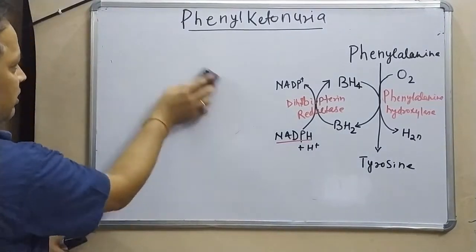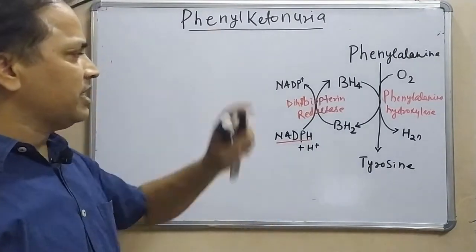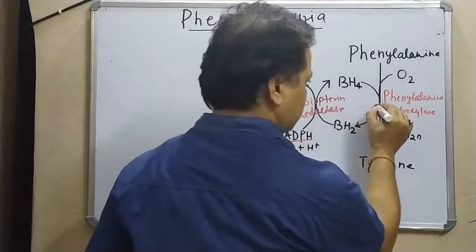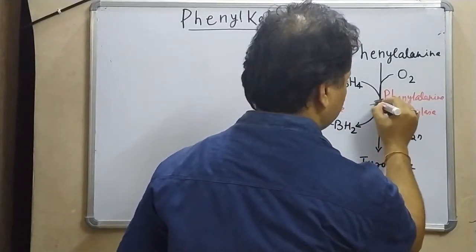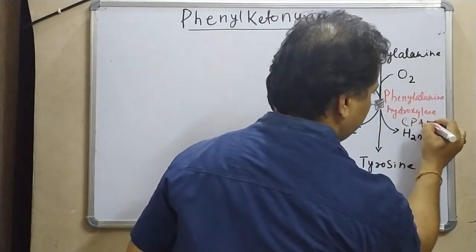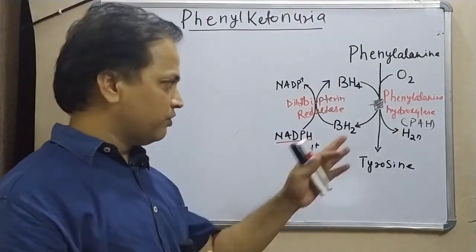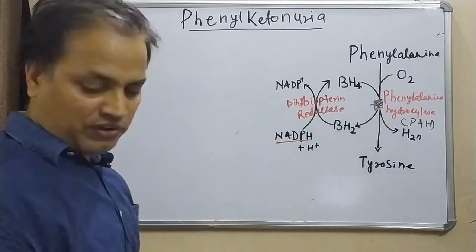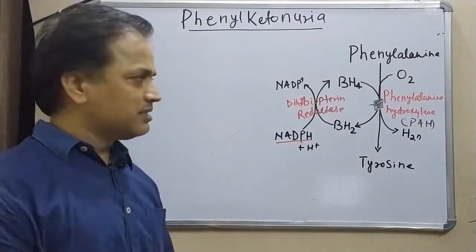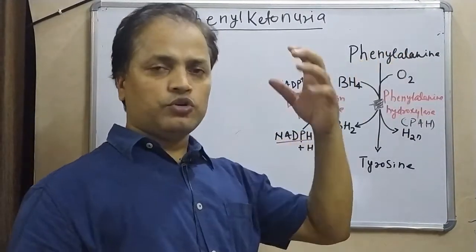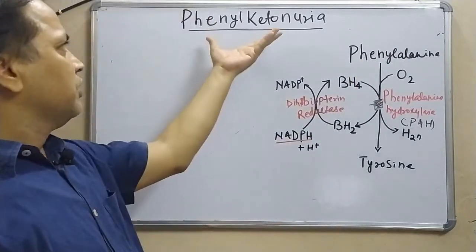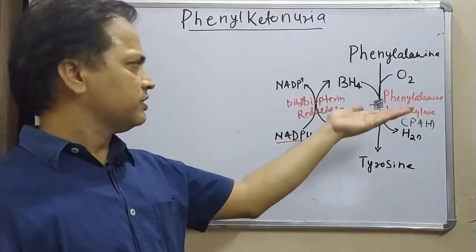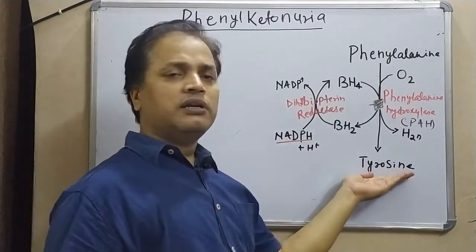Now, in classical phenylketonuria, the enzyme phenylalanine hydroxylase (PAH) is defective — the gene for PAH is mutated. So the conversion of phenylalanine to tyrosine does not happen. As a result, phenylalanine accumulates in the body, and tyrosine is not produced. This accumulation of phenylalanine is the hallmark of phenylketonuria.